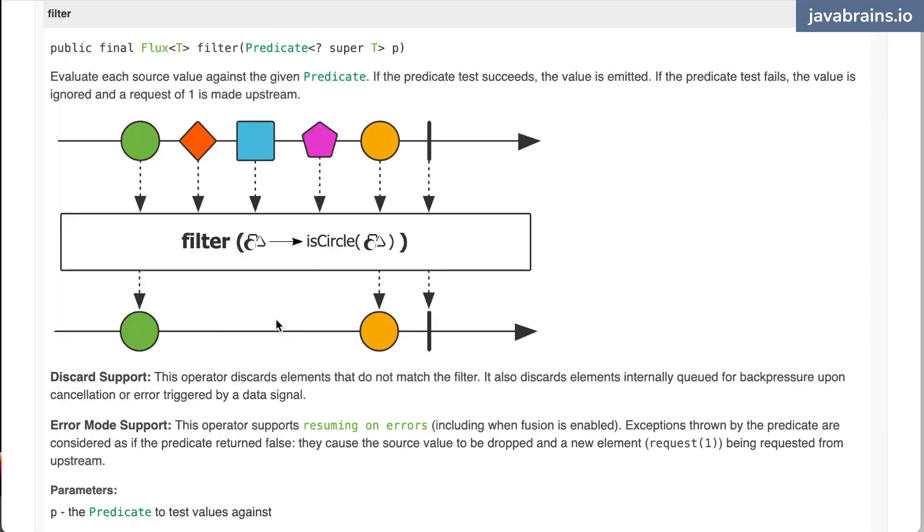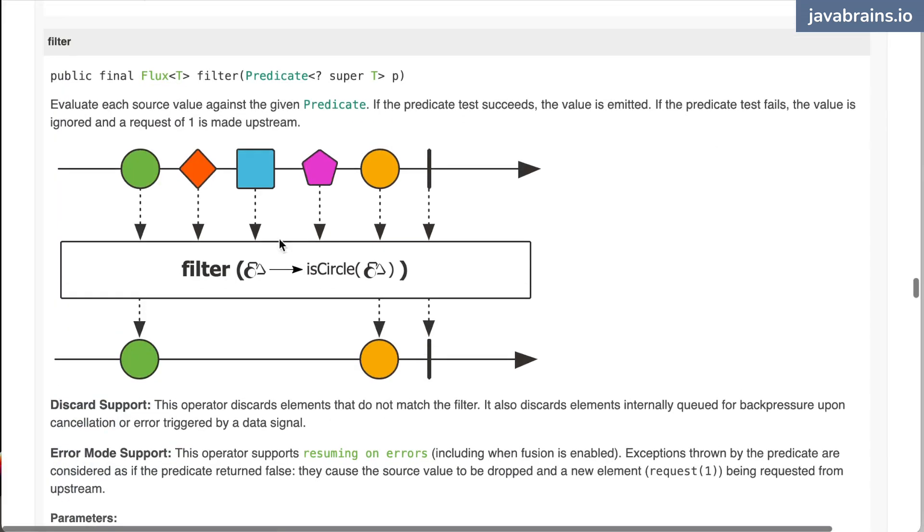The way it works is you have a filter which has a predicate, right? It determines true or false, yes or no, for each element you give it. This operator is going to take each item and apply that predicate to it over time, and then it is going to either allow the item or block the item.